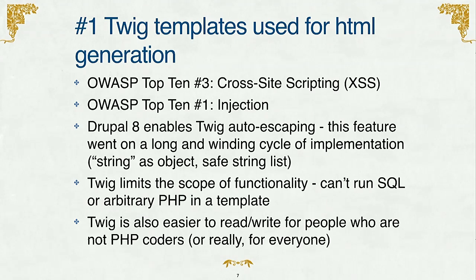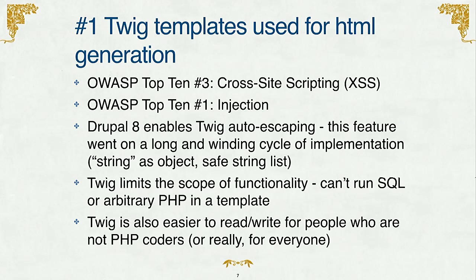Number one: Twig templates being used for HTML generation. I picked this as number one because it covers especially the most common vulnerability in Drupal, which is cross-site scripting. In past versions of Drupal you'd see this when someone forgot to escape a node title — the attacker could type in a script tag and execute some script to take over your site. Themers could also do something like run SQL queries in PHP templates, opening up code injection vulnerabilities at the template layer. This shift is really a huge win for security.